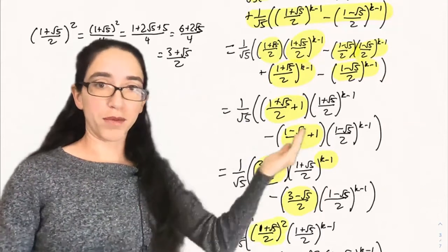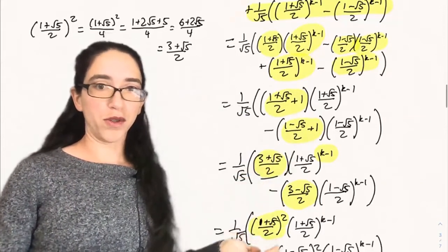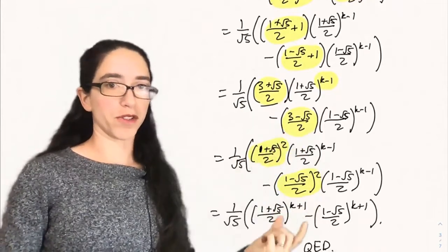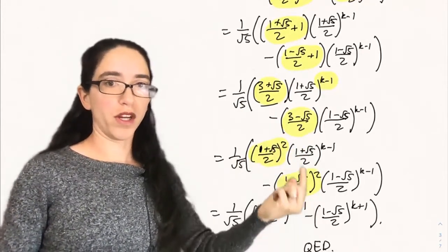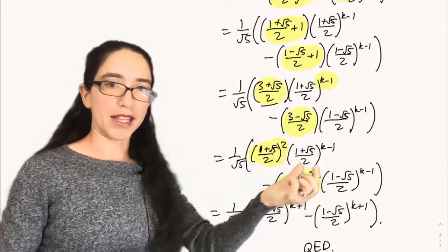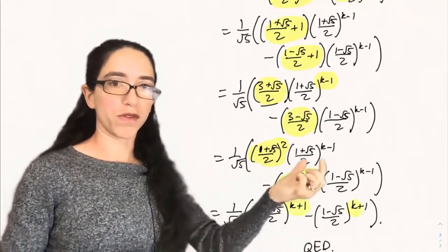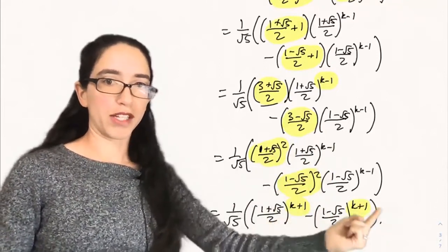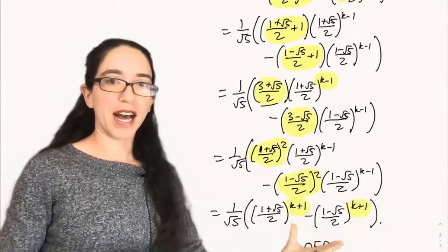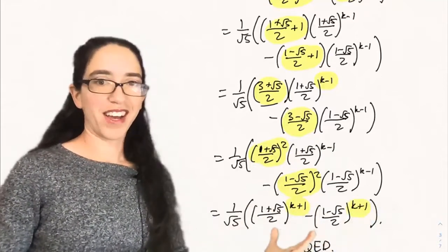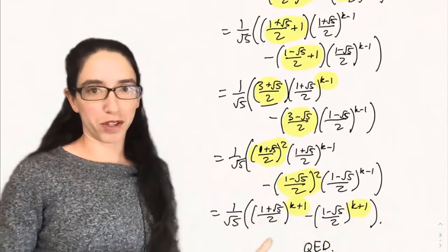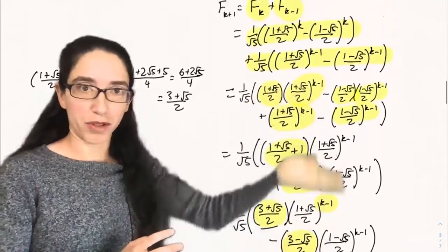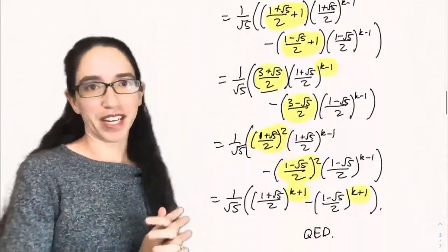So we can substitute: (3+√5)/2 is [(1+√5)/2]², and (3−√5)/2 is [(1−√5)/2]². Now we can combine these products: this becomes (1+√5)/2 to the 2+(k−1), which is k+1, and (1−√5)/2 to the k+1. That's exactly the k+1 formula. So we've proven using this computation that the k+1-th Fibonacci number satisfies Binet's formula, completing the strong induction.